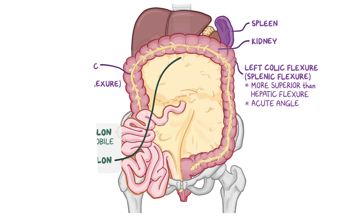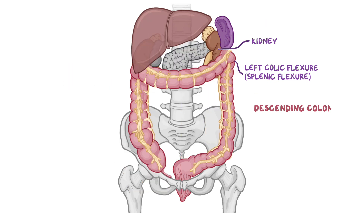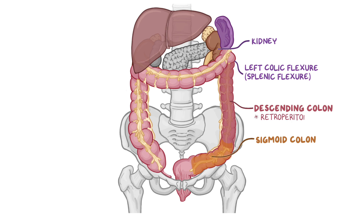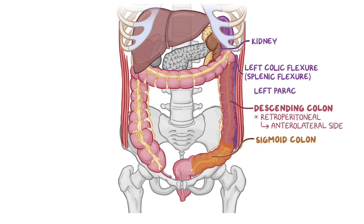The fourth part of the colon is the descending colon, which stretches from the left colic flexure, lateral to the left kidney, down to the left iliac fossa, where it connects to the sigmoid colon. Just like the ascending colon, the descending colon is retroperitoneal and covered by peritoneum on its anterolateral side. Also similar to the right side of the body, there's a left pericolic gutter between the descending colon and the left abdominal wall.